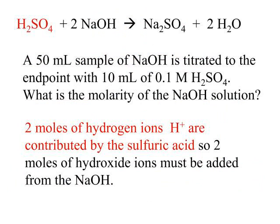Let's look at another problem. In this problem, we have an acid that produces 2 hydrogen ions, so the balanced equation shows it is not a 1-to-1 ratio. Using MA×VA = MB×VB is not as straightforward, but it certainly is possible. Let's look at this problem both ways.